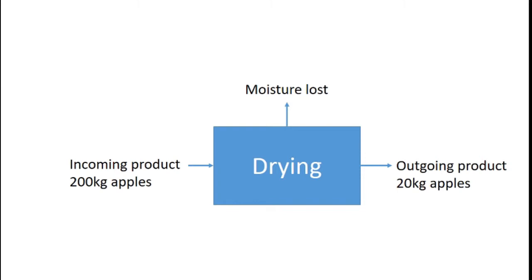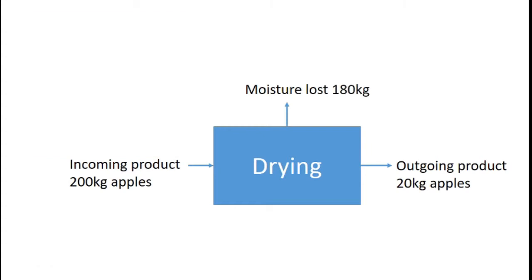So the core question: how much moisture did we lose? Mass going in equals mass going out — mass doesn't just vanish. So just because moisture is being lost doesn't mean mass has disappeared; it has been evaporated off as moisture loss. Our ingoing product of 200 kilos has to equal the moisture loss plus the solids matter — the 20 kilos of apple chips. So we've lost 200 minus 20, which equals 180 kilos of moisture. That's basic algebra, balancing the equation.